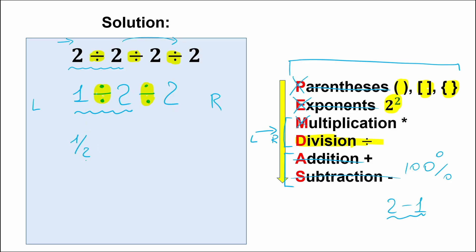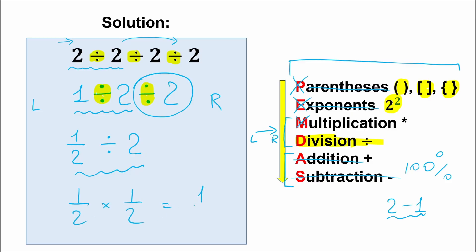Of course, you can write 1 divided by 2 as a fraction — one-half — or as 0.5. Let's write it as a basic fraction. And the final step: we have division by 2, so one-half divided by 2. This is very basic: one-half divided by 2 is the same as multiplying one-half times one-half. So the correct answer is one-fourth. Just keep in mind: one-fourth is the correct answer according to PEMDAS order of operations.